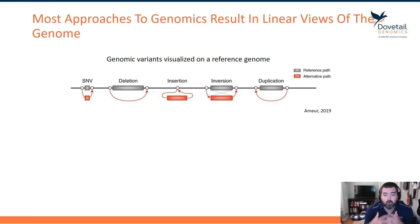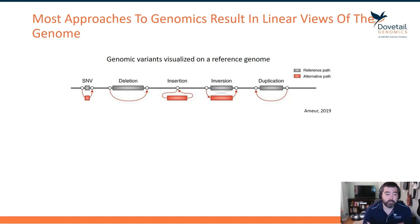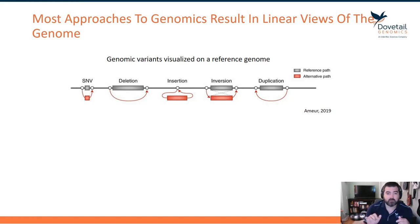Many approaches to genomics today result in a very linear view of the genome. The image at the top shows genomic variants visualized on a reference genome where your genome is pretty much a straight line, and you're looking at how genomic components can be rearranged on that linear landscape.